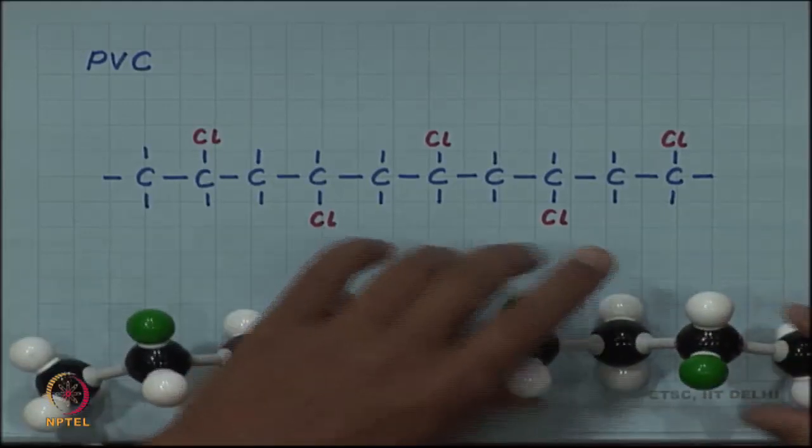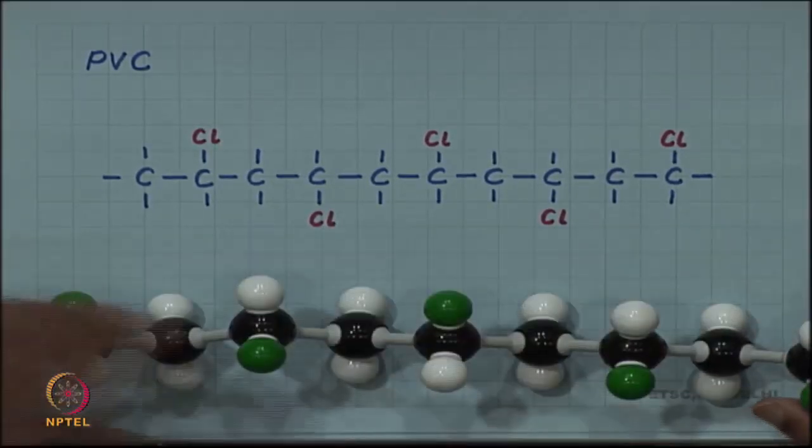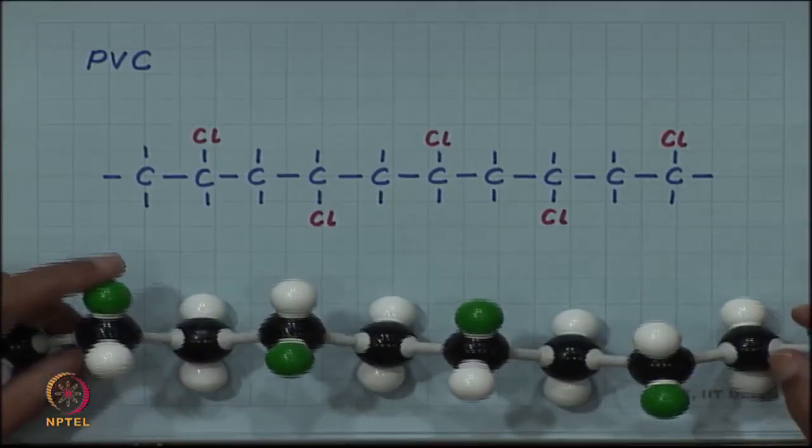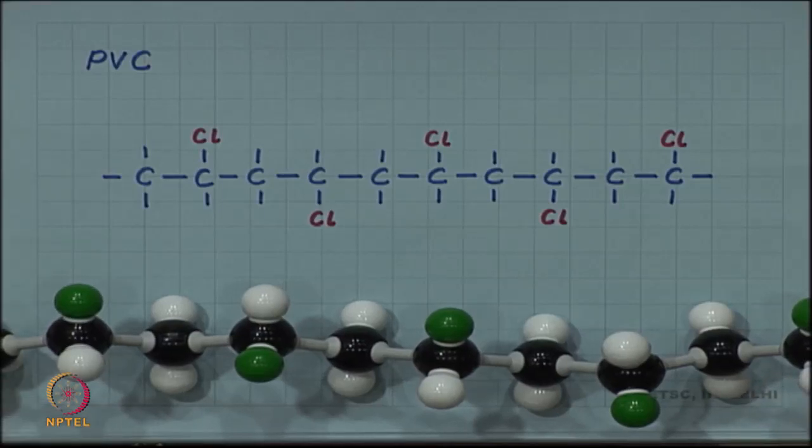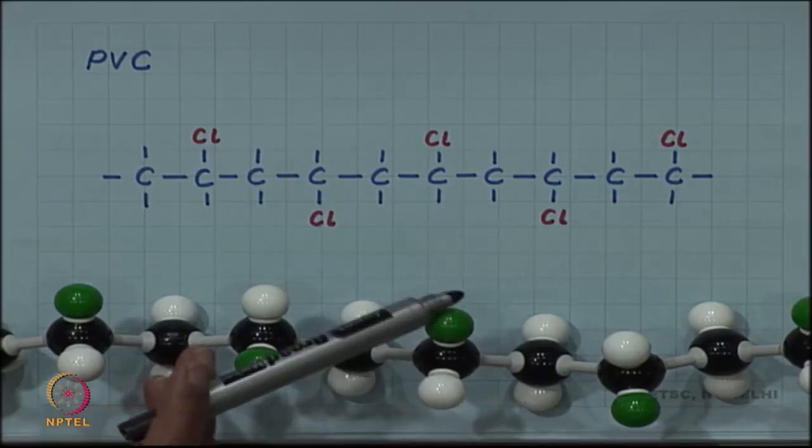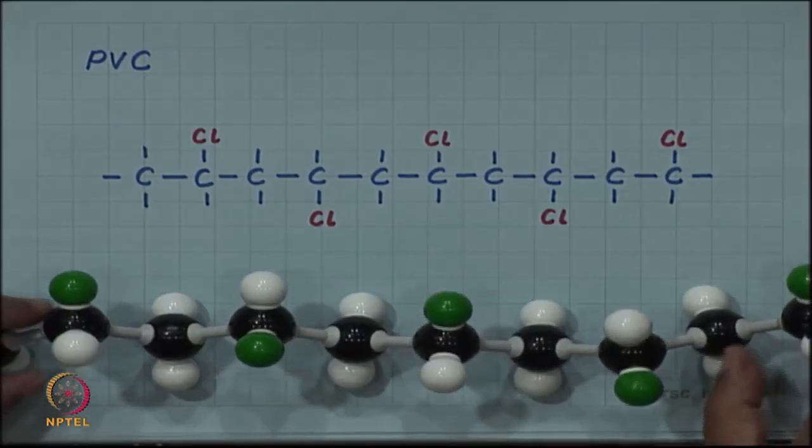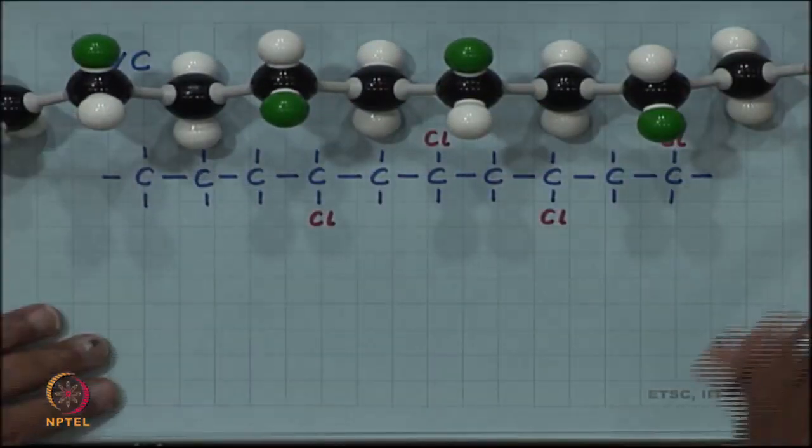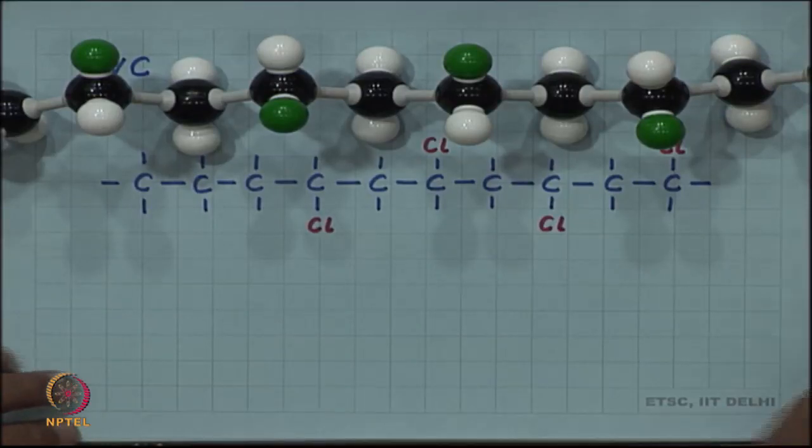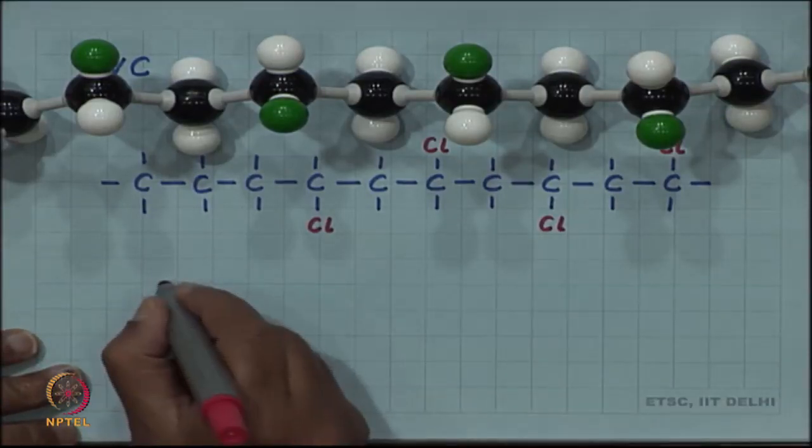Here is the model. You can see now, if I am following the carbon-carbon backbone as my path, once the chlorine comes on the left, another chlorine comes on the right. If such alternating positions of chlorine are there, then we call such a structure syndiotactic.